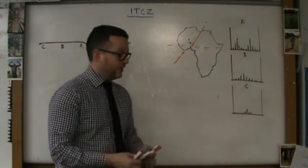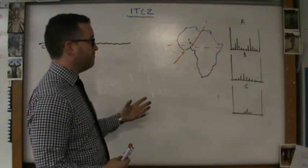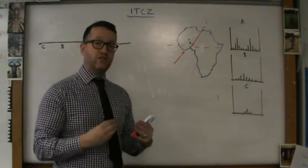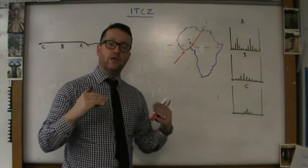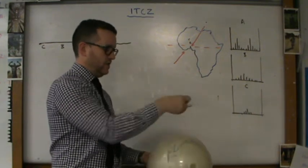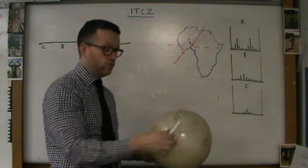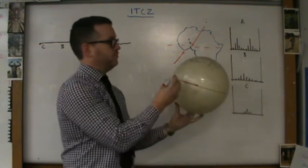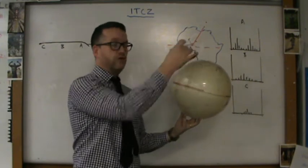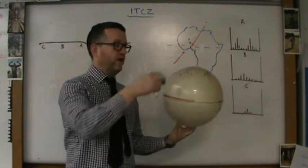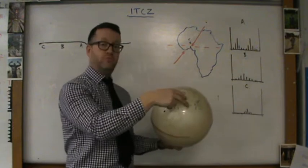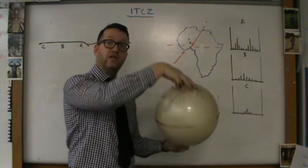So where do we start? Essentially the ITCZ is a line that goes around the world and represents where the temperature is hottest. Many people think that the area where the temperature is hottest is the equator. This is not so. The equator, this line, is merely the mathematical dividing line between north and south.